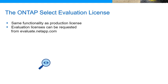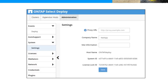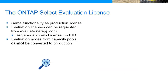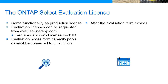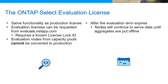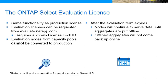To request an evaluation license, go to evaluate.netapp.com. A license lock ID or LLID is required when you submit the request. You can find LLIDs in the ONTAP Select Deploy VM. Evaluation licenses cannot be converted to production licenses in ONTAP Select 9.6. If the evaluation period extends beyond the expiration date, the nodes continue to serve data until the aggregates are put offline manually or forcibly. For example, a power loss causes the aggregate to go offline. The aggregates do not come back online if the license is expired.